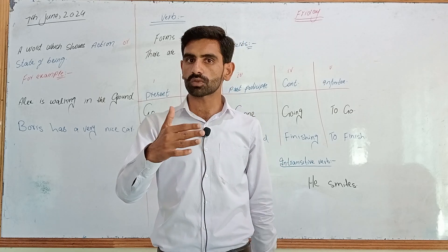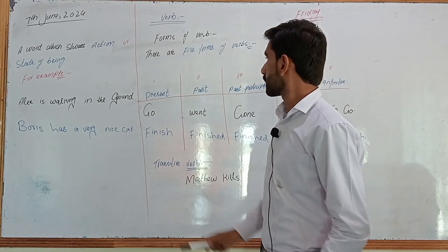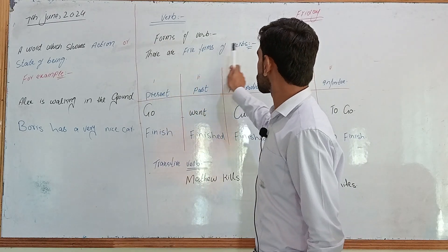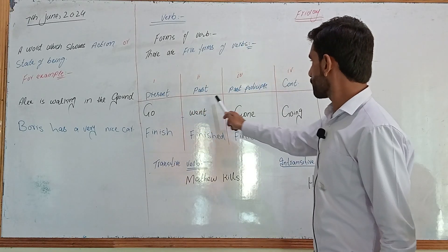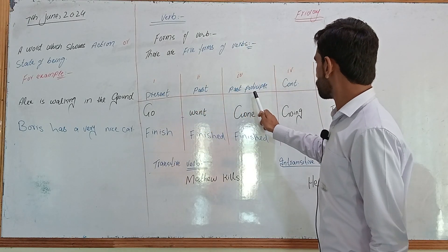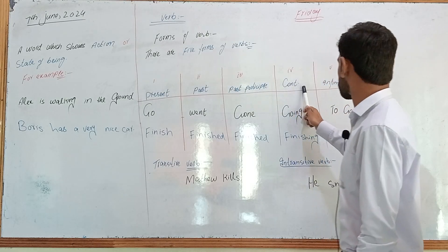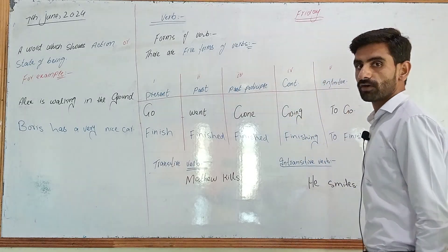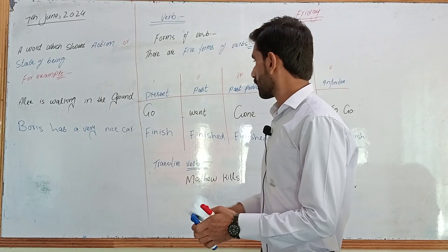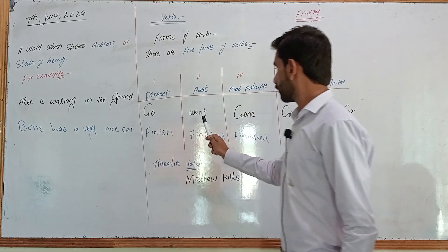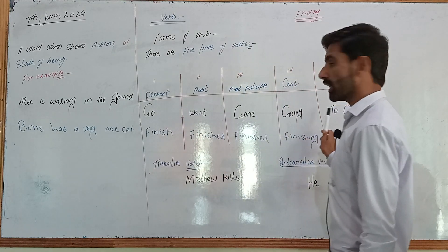Now coming towards the next — what are the forms of verbs? There are five forms of verbs: present, past, past participle, continuous or present participle, and infinitive. For example, take the verb 'go': go, went, gone, going, and to go.